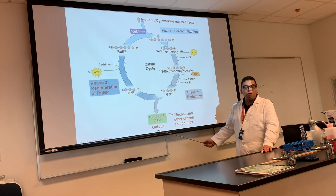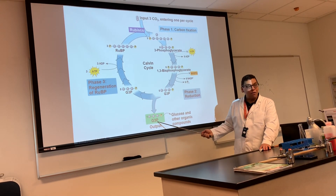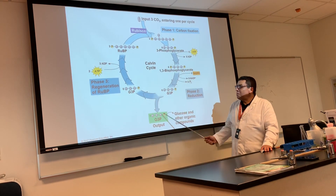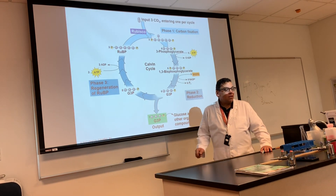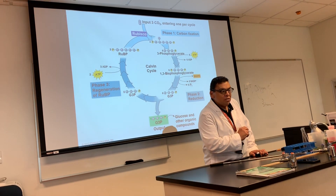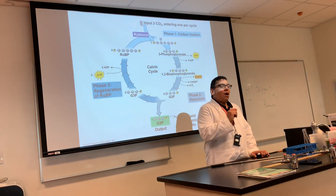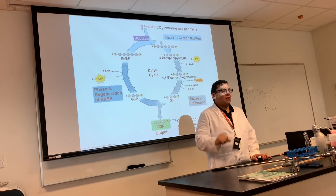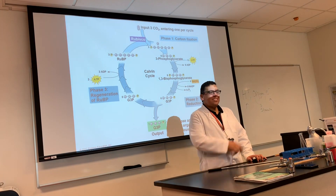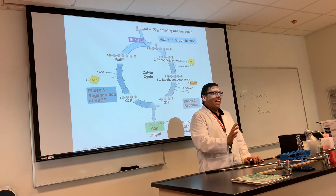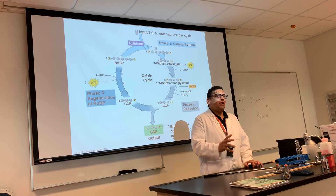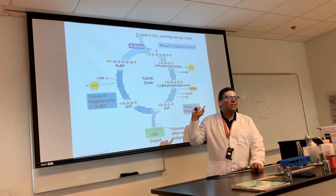The sixth G3P is the one that comes out. This is not glucose — this is half of glucose. Each turn of the cycle adds one carbon of the glucose. Glucose has six carbons, so to make one glucose molecule you have to turn the cycle six times. One carbon, one turn — glucose has six, so six turns.